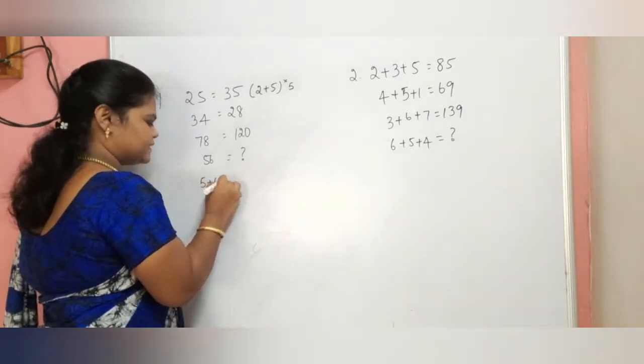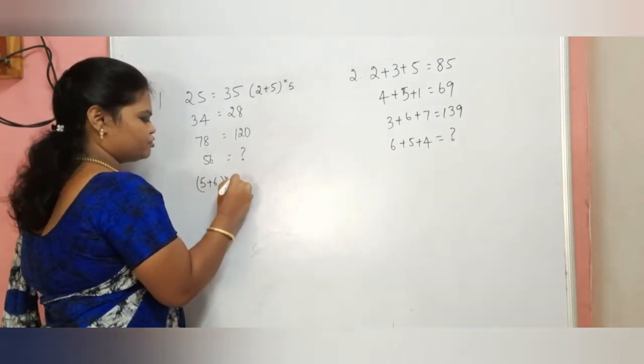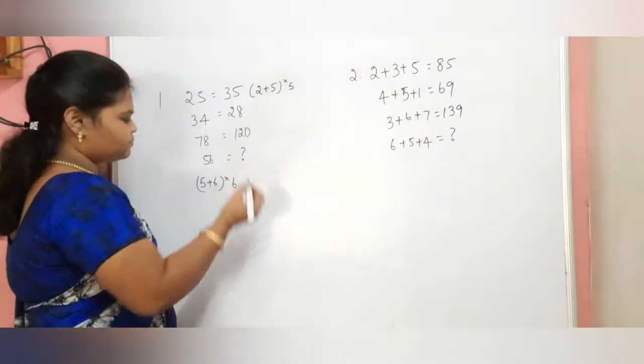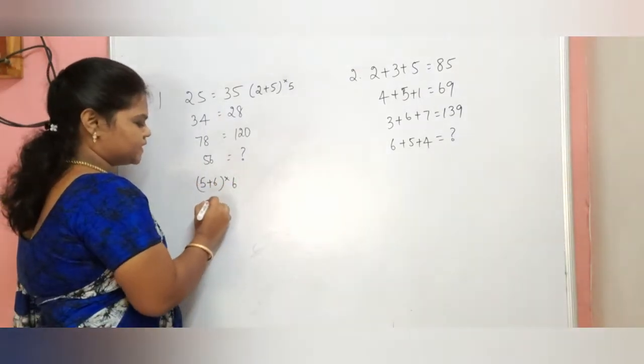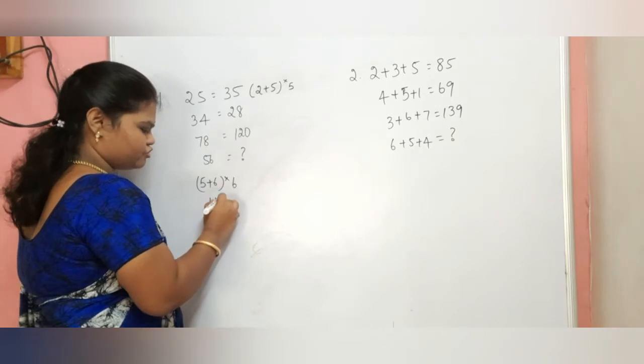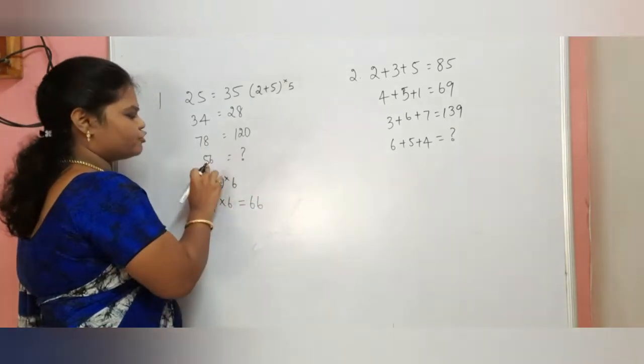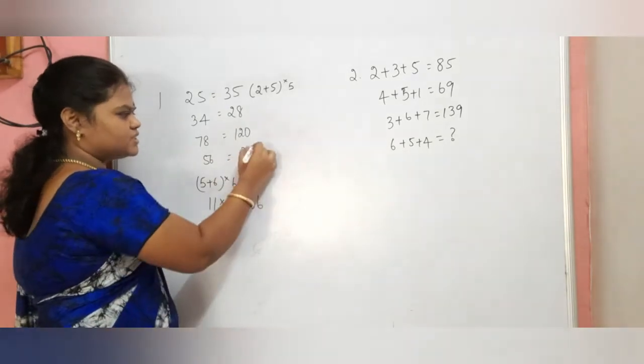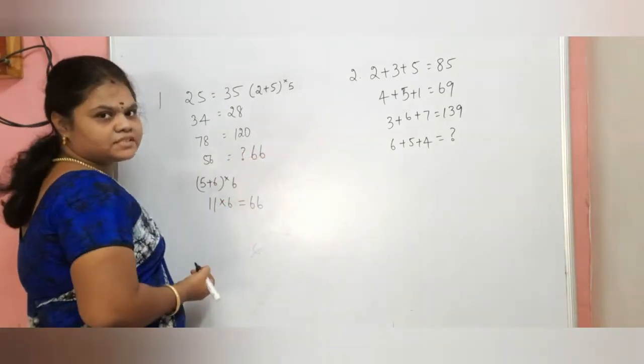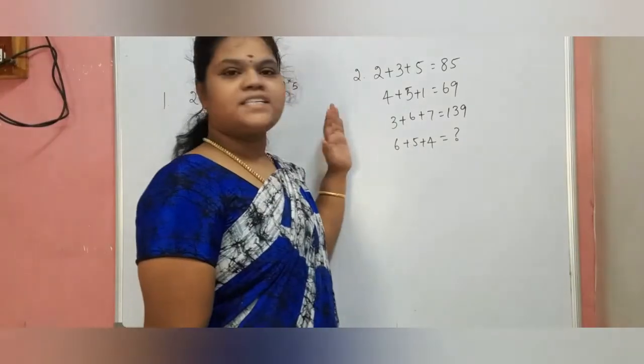5 plus 6 equals 11, 11 into 6 equals 66. So, 56 equal to 66. We will do the next part.